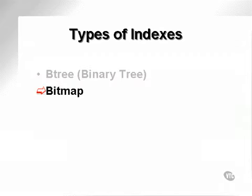A bitmap is literally a map of bits. If you took a two-dimensional square and cut it up into blocks, you'd have zeros in some blocks and ones in other blocks. It's a two-dimensional picture of ones and zeros.